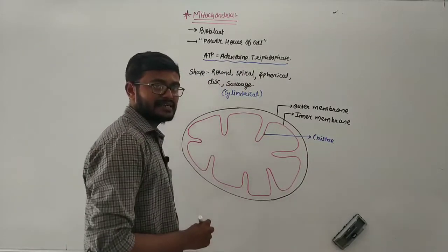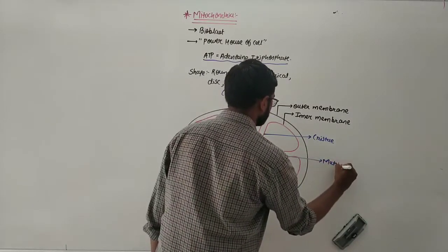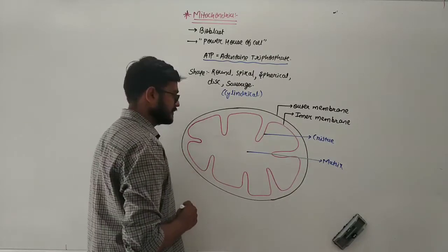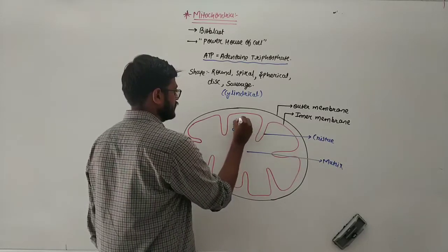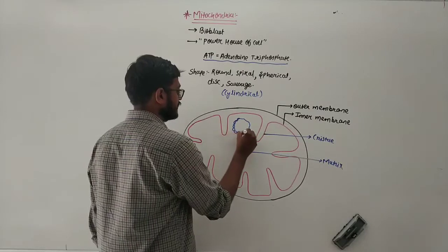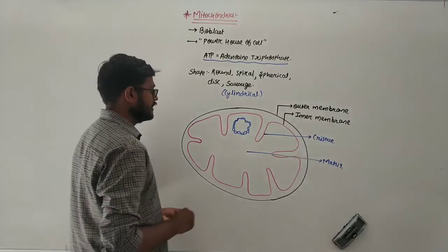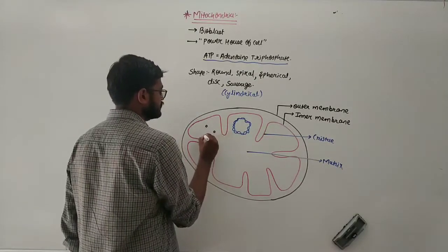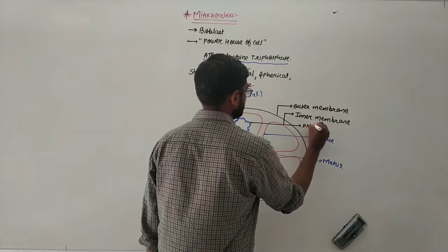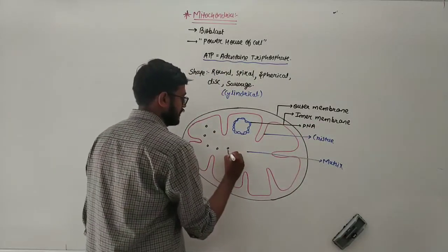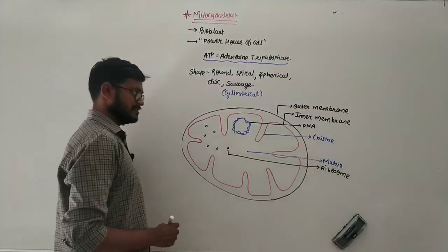On the inner side of the cristae, the region is termed the matrix. Inside this matrix region, a specialized kind of DNA is also located. So the mitochondria has its own DNA. Apart from having its own DNA, it also contains ribosomes within it. So the mitochondria contains deoxyribonucleic acid (DNA) and ribosomes.